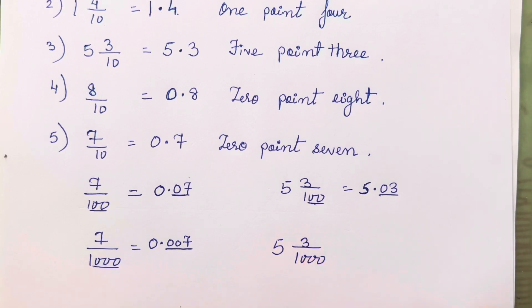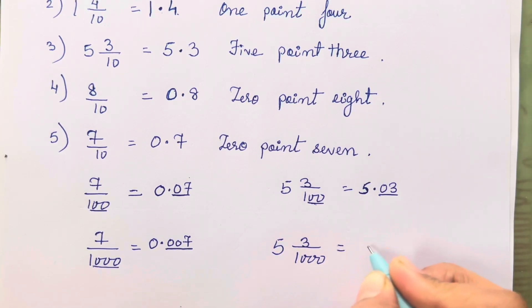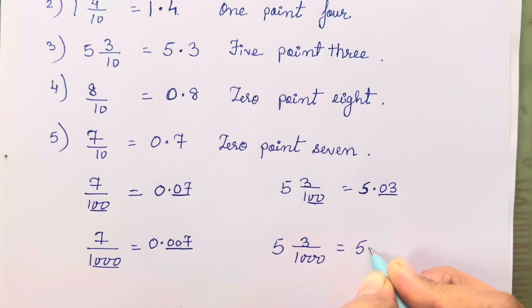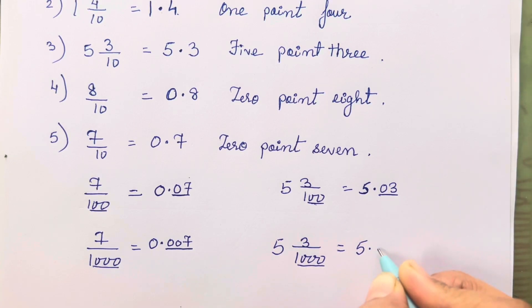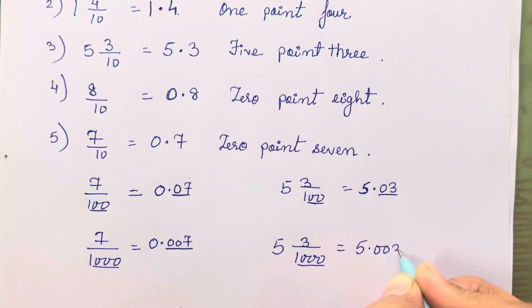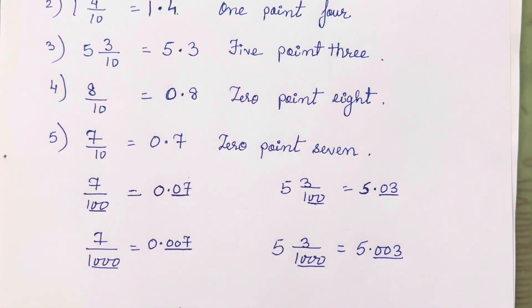These you don't have to solve — this is just for your explanation. For 5 3/1000, we write 5 point, and since there are three digits needed after the decimal, we get 0, 0, 3 — giving us 5.003.